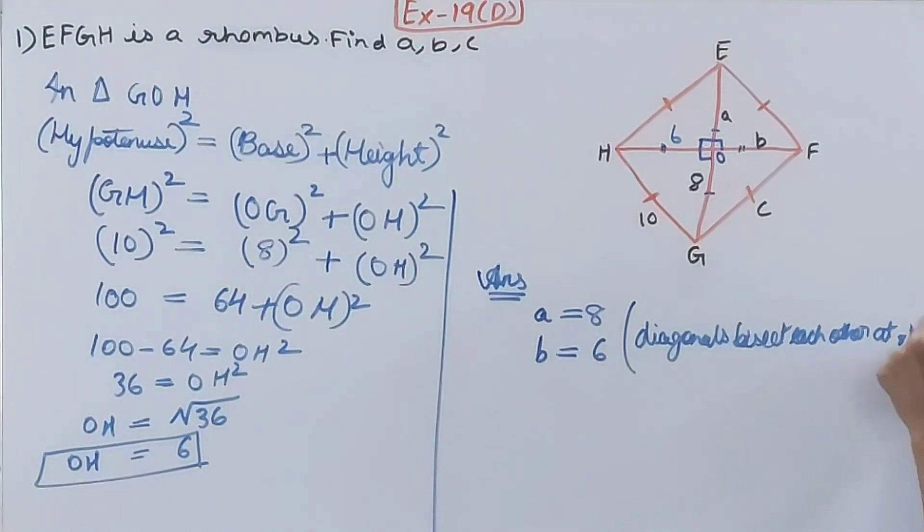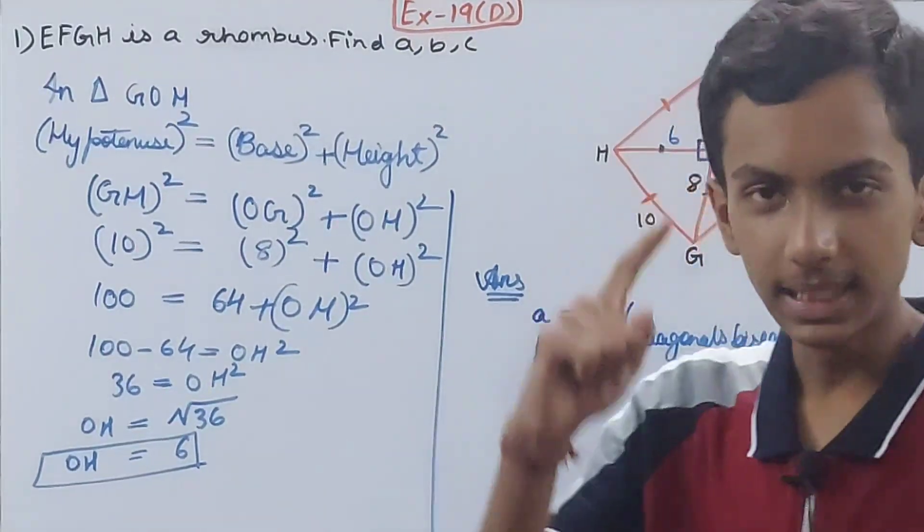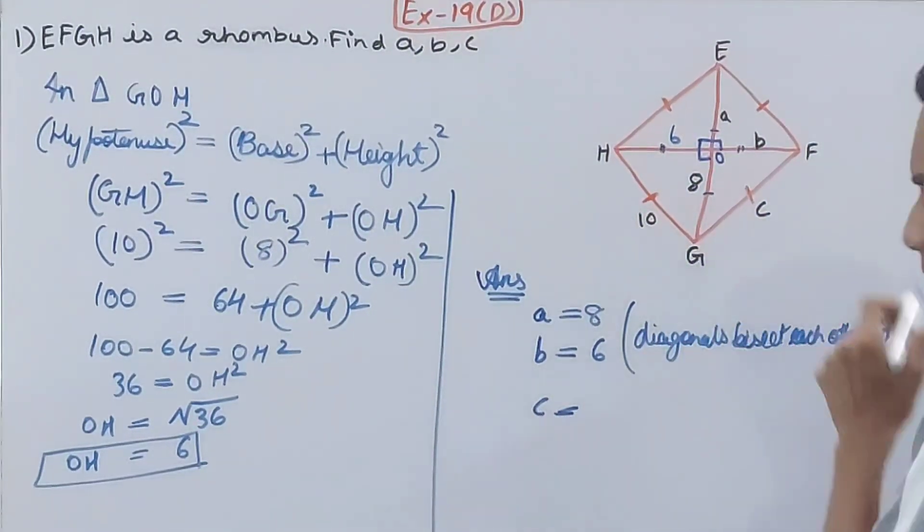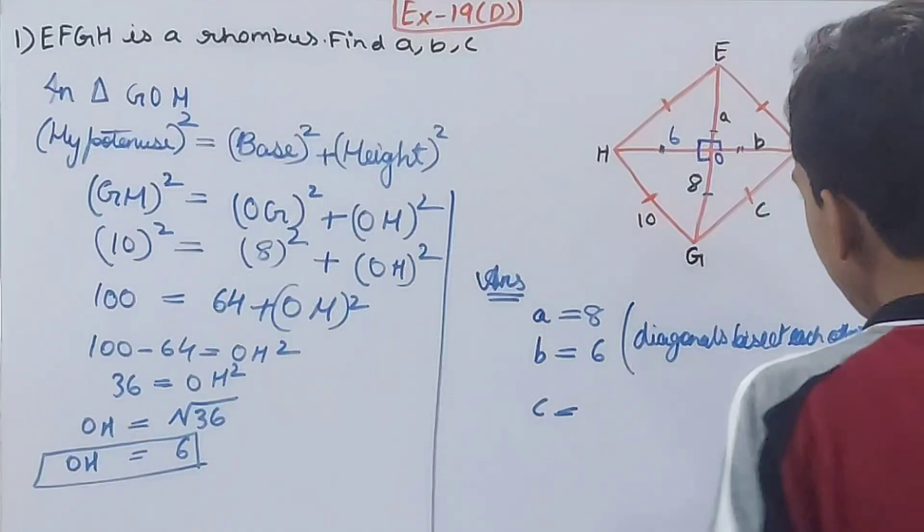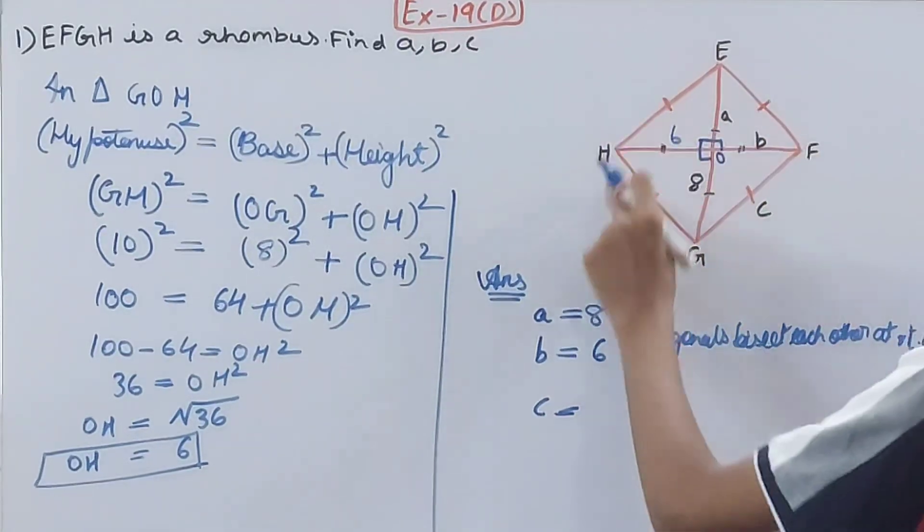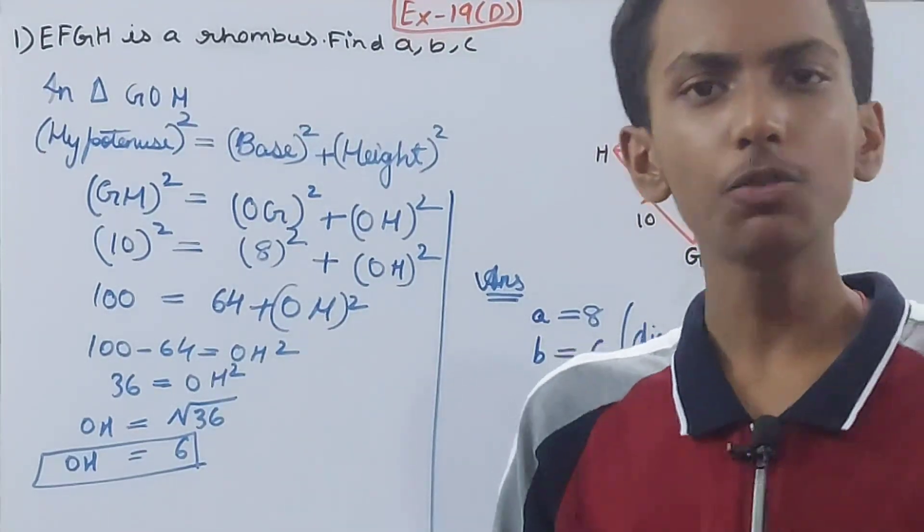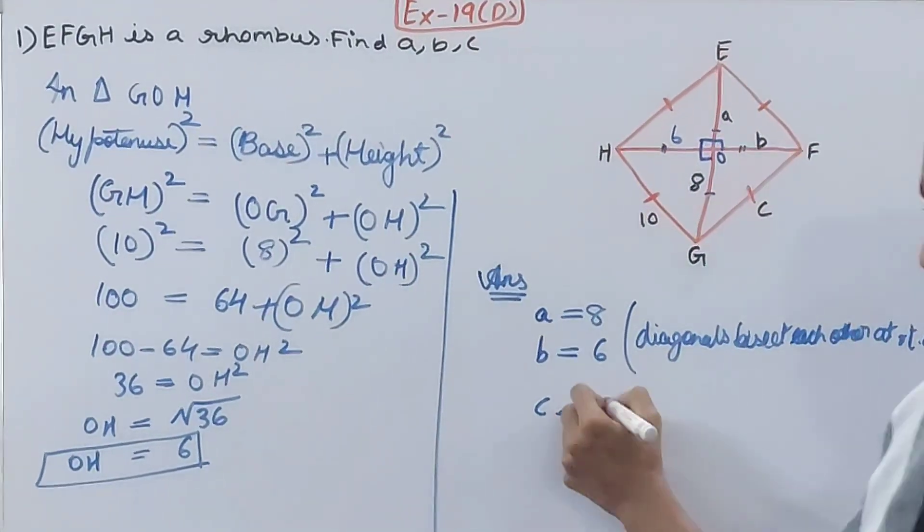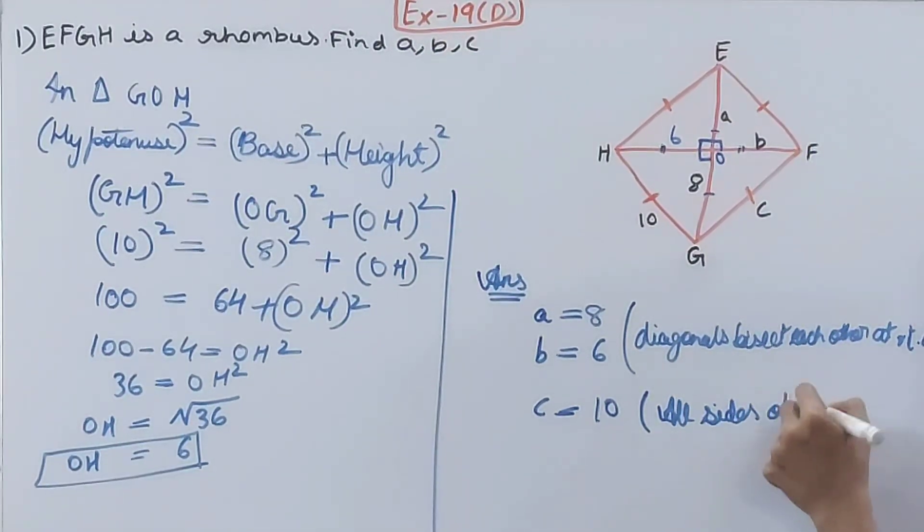at right angles. So a is equal to 8, b is equal to 6. What will c be equal to? C is the side of the rhombus, and we know all the sides in a rhombus are equal. So c is equal to 10, because out of four sides, even if you know the measure of any one side, then you can find all the other three sides. We know measure of one side is 10, so the measure of all the four sides will be 10. Therefore c will be equal to 10 because all sides of a rhombus are equal.